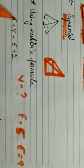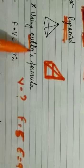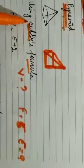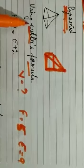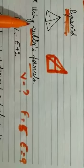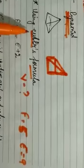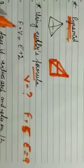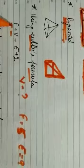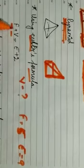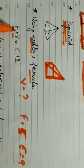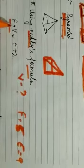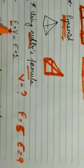Now we will understand a new term: Euler's formula. Euler is the name of a great mathematician. The formula is F plus V is equal to E plus 2. When we need to find faces, vertices, or edges, we can use this formula.